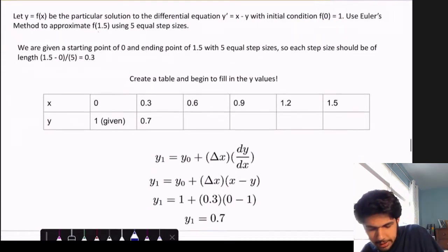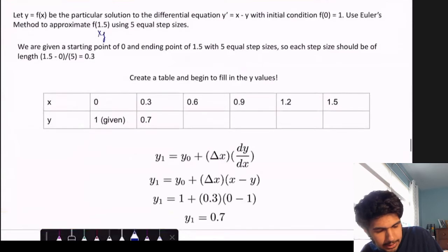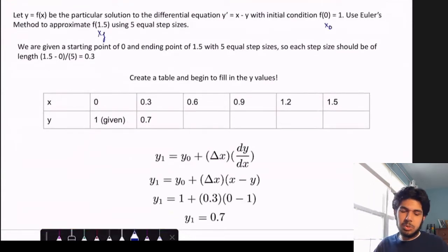So this is our x sub f, and this is our x naught. So we're traveling 1.5, we need five equal step sizes. So if we do this kind of division here, we get step size of 0.3. So we create this little table here, starting with our initial point, and then creating these steps, incrementing by 0.3 until we reach our final destination of 1.5.